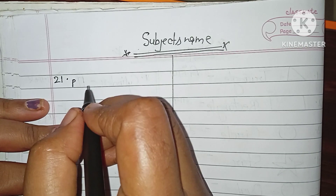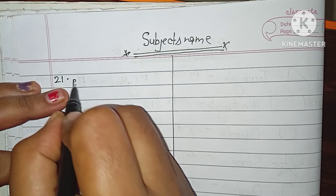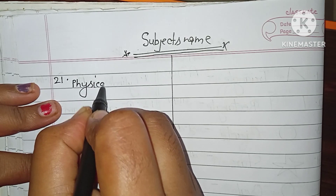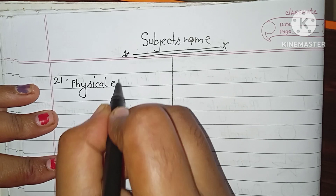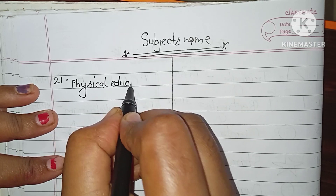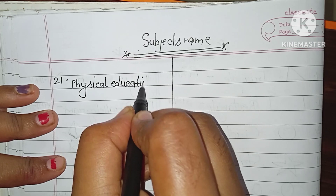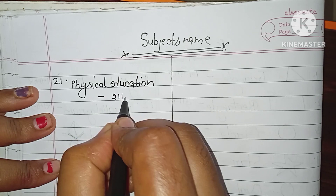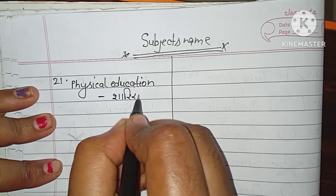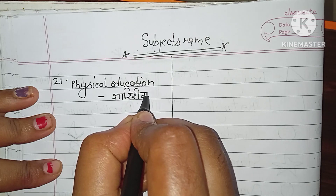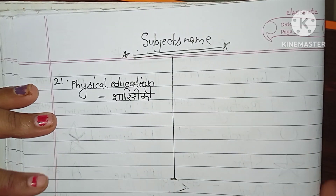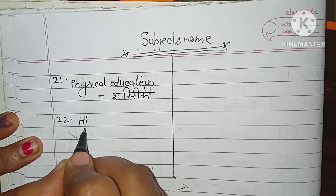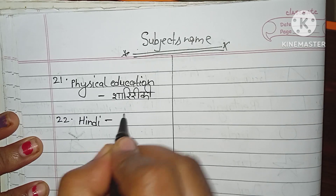Physical Education, P-H-Y-S-I-C-A-L E-D-U-C-A-T-I-O-N, Shariki. Number 21, Hindi, H-I-N-D-I, Hindi.